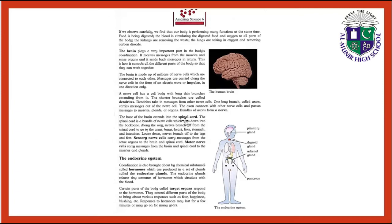The base of the brain extends into the spinal cord. The spinal cord is a bundle of nerve cells which runs down into the backbone. Along the way, nerve branches off from the spinal cord to reach the arms, lungs, heart, liver, stomach, and intestines. Lower down, nerve branches off to the legs and feet. Sensory nerve cells carry messages from the sense organs to the brain and spinal cord. Motor nerve cells carry messages from the brain and spinal cord to the muscles and glands.